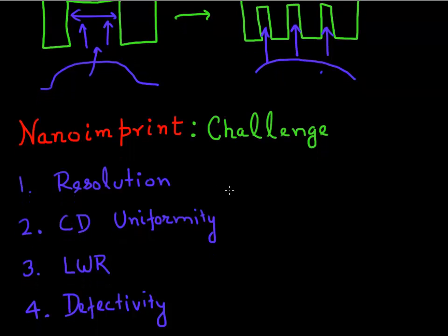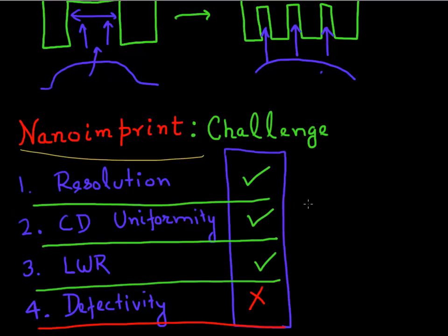Of course, there's no free lunch in the semiconductor industry. Looking at the scorecard, nano imprint is actually very good for resolution — whatever resolution you achieve on the template you can exactly achieve on your resist. CD uniformity and line-width roughness are also best in class. But the main killer for nano imprint lithography is defects. Whenever there's a defect in the template, it balloons up and creates more and more defects — the same defect reproduced in every wafer. That is one of the main challenges with nano imprint lithography.